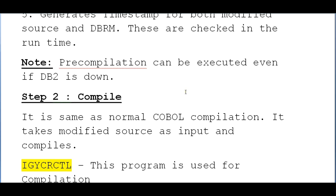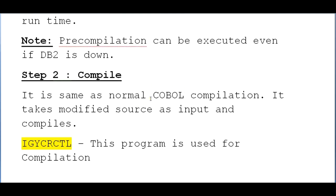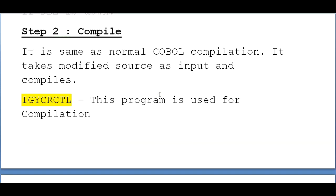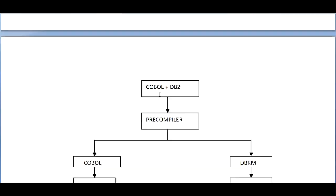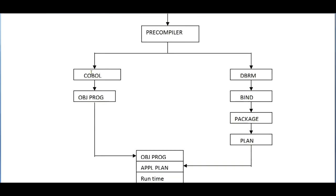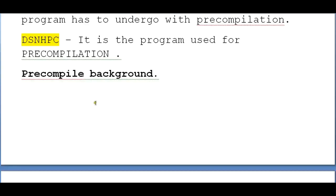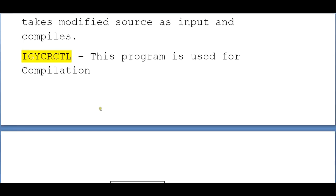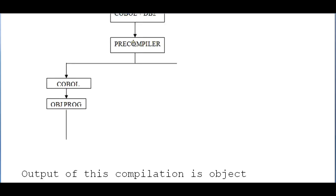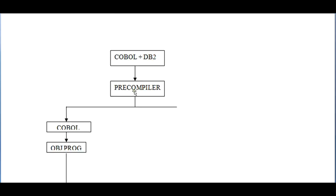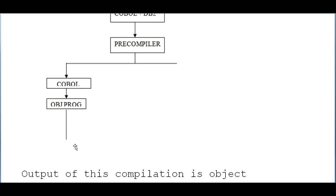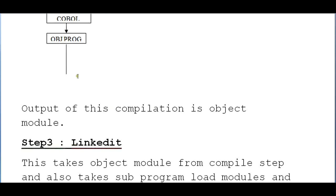Step two is compilation, which is the same as a normal COBOL compilation. It takes the modified source as input, compiles it, and creates the object program. The program used for compilation is IGYCRCTL. The output of this compilation step is the object module.